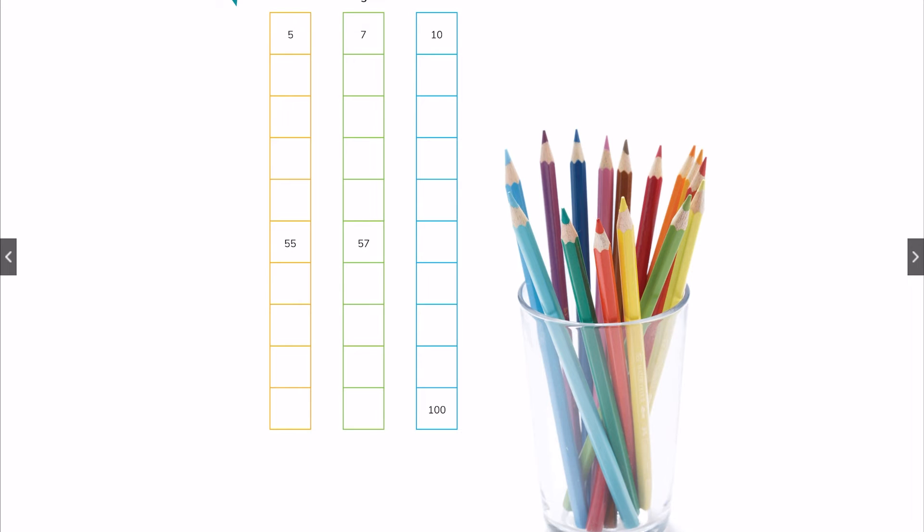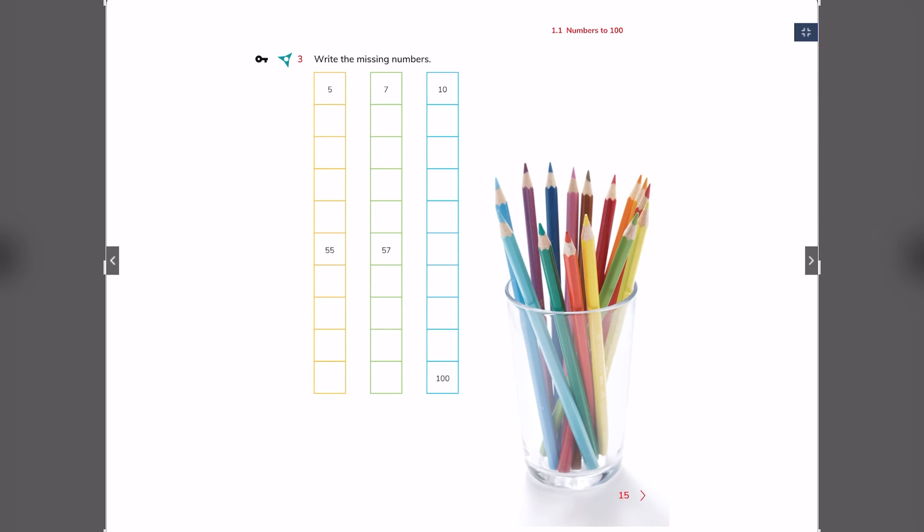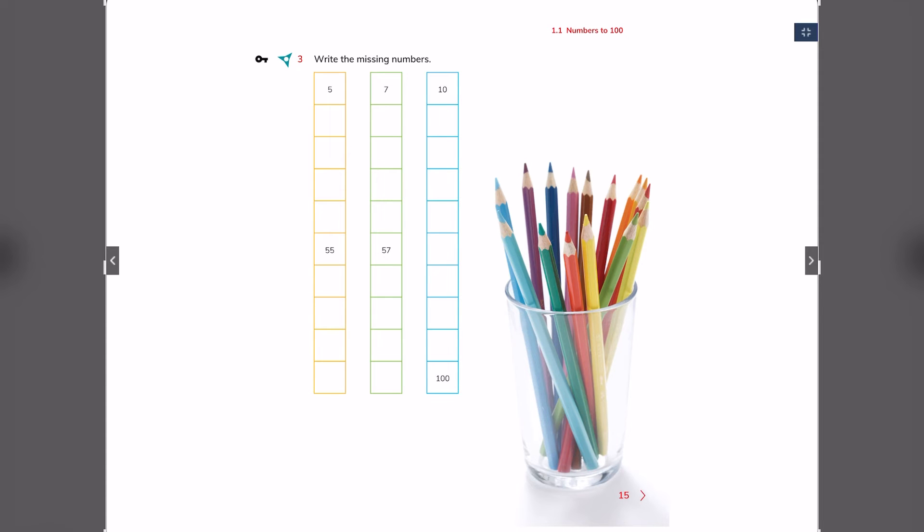We have more exercises for this. Doing it in a column style, you always add 10 for each section, for each square. So 5 plus 10 is 15, plus 10 is 25, plus 10 is 35, plus 10 is 45, and then so on. You do the same with this, with this part, and with this part. Always add 10. After finishing this, go to the next page.